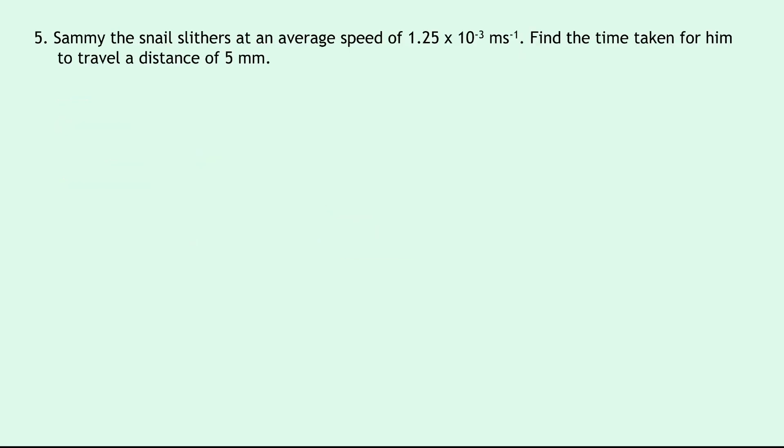And for the last example number 5, Sammy the snail slithers at an average speed of 1.25 times 10 to the minus 3 meters per second. Find the time taken for him to travel a distance of 5 millimeters. So we're asked to find the time, so I'm putting t equals question mark. The only prefix we need to be aware of here is for the distance, the millimeters, so we need to convert that into meters. Our speed is 1.25 times 10 to the minus 3 meters per second and our distance is 5 millimeters, which if we replace milli with times 10 to the minus 3 we have 5 times 10 to the minus 3 meters. Just like before, writing down our equation we have d equals vt, then we need to rearrange for the time so we get time equals distance over speed. Substituting in the numbers we have 5 times 10 to the minus 3 divided by 1.25 times 10 to the minus 3 gives us a final answer of 4 seconds.